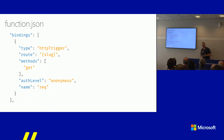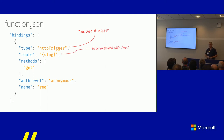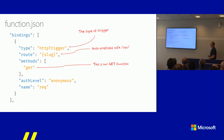First, you define a function.json file with a specific block for your bindings. For an HTTP trigger, you define the trigger type, add the route — which is fairly obvious — and remember that all your HTTP routes are prefixed with 'api'. You also define the method, such as GET, POST, PUT, or DELETE. In our case it's just GET because we want to retrieve the minified URL.